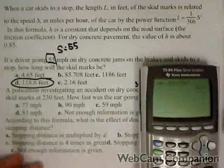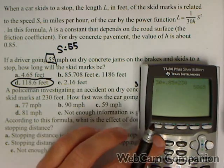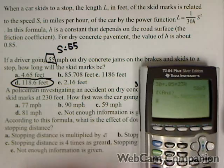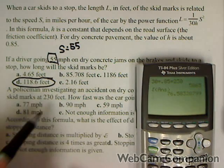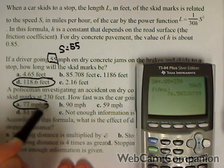Now remember that's not our answer. It also wouldn't make sense for somebody to be going that fast. We have to square root that answer because we solved for s squared. So somebody would be going roughly about 76 and a half miles an hour or 77 miles per hour.